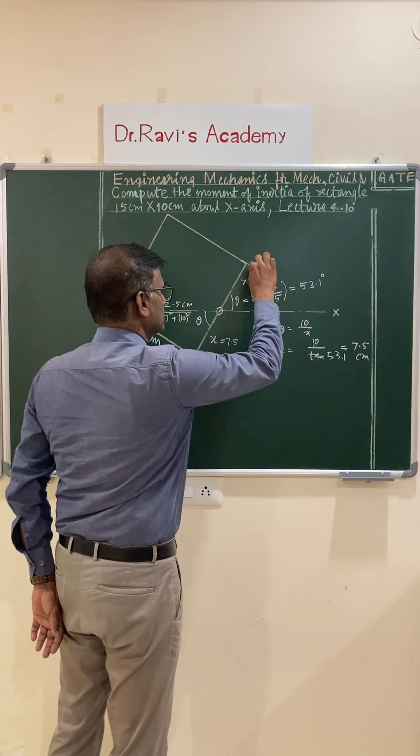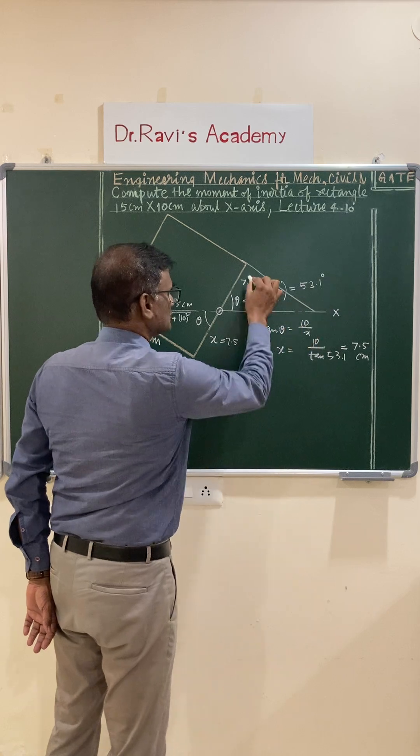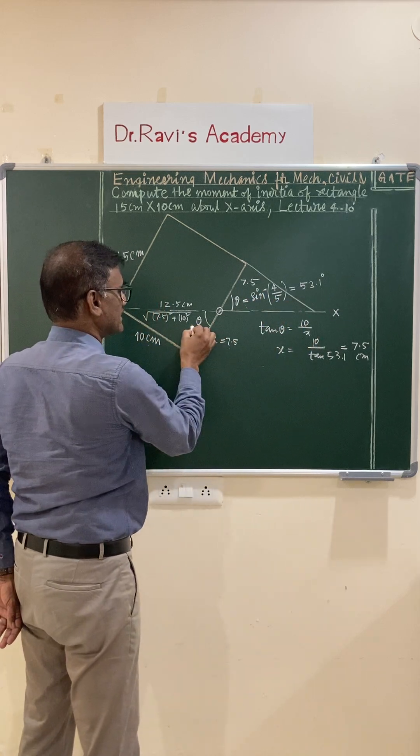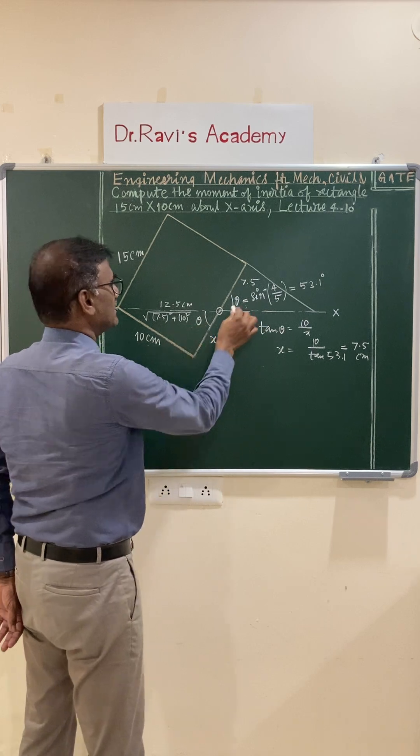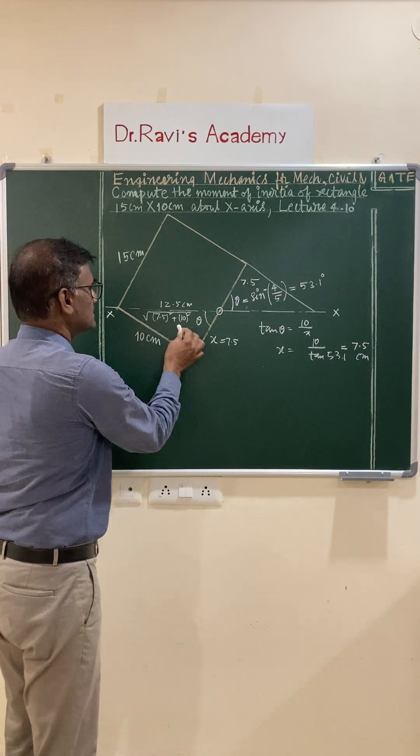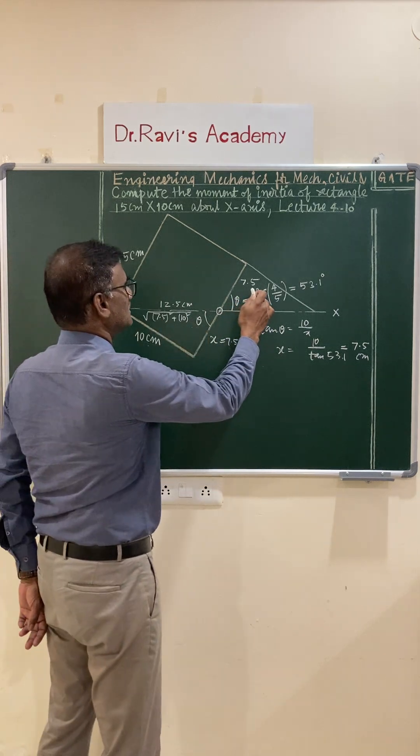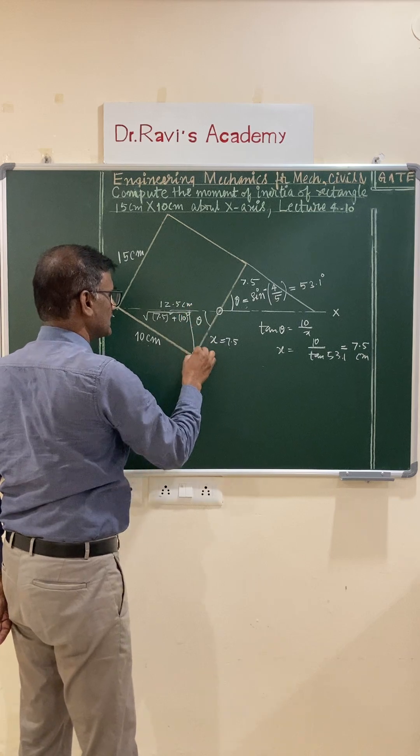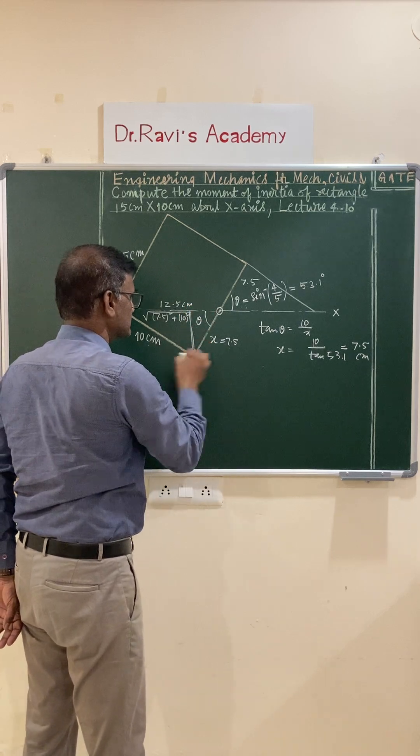If you extend this, this is empty space. These two triangles are identical triangles. The dimension whatever you have here, if you cut and paste it here, you are going to get this is a triangle.